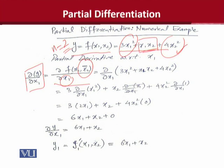Actually वो constant नहीं है, लेकिन हम उन्हें constant treat करेंगे. जैसे हम चार लोगों में से तीन को कहते हैं कि आप खामोश हो जाएं, हम पहले की बात सुनें — वो बोल सकते हैं, लेकिन वक्ती तौर पर हमने उन्हें खामोश किया है ताकि हम पहले बंदे की बात तवज्जह से सुन सकें. इसी तरह यहाँ भी हम x1 का असर देखना चाहते हैं, और x2 को चाहते हैं कि वो इस वक्त अपना असर न दिखाए और constant रहे — और constant किसी variable को affect नहीं करता.